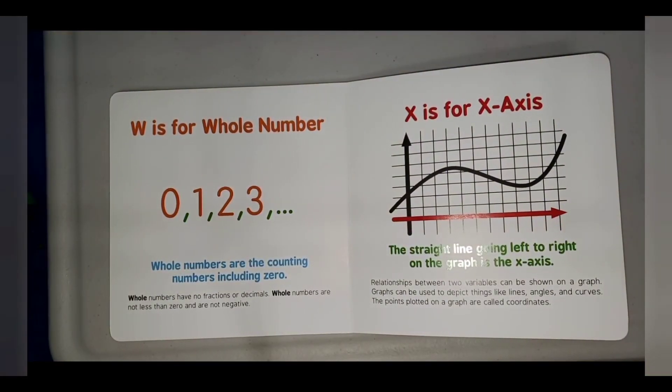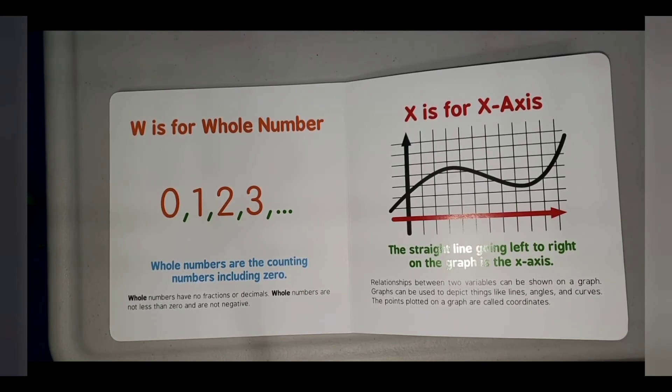X is for X-axis. The straight line going left to right on a graph is the x-axis. Relationships between two variables can be shown on a graph. Graphs can be used to show things like lines, angles, and curves. The points plotted on the graph are called coordinates.